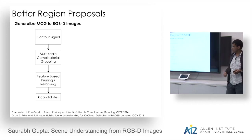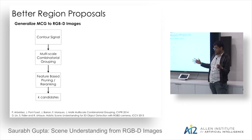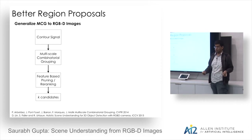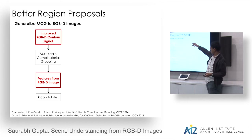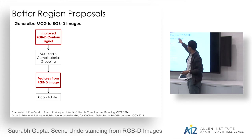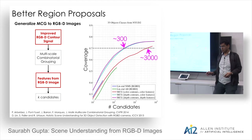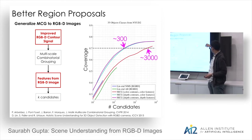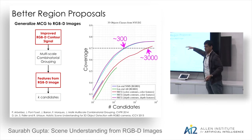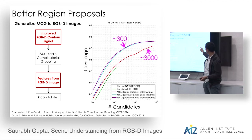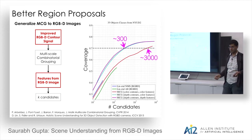Better contours lead to better region proposals — chunks of the image corresponding to a single object. Using improved RGBD contours in a standard region proposal scheme, you get a large reduction in the number of regions needed. With RGB only, you need around 3,000 regions for 70% coverage; with our depth-informed approach, only around 300 regions achieve the same recall.